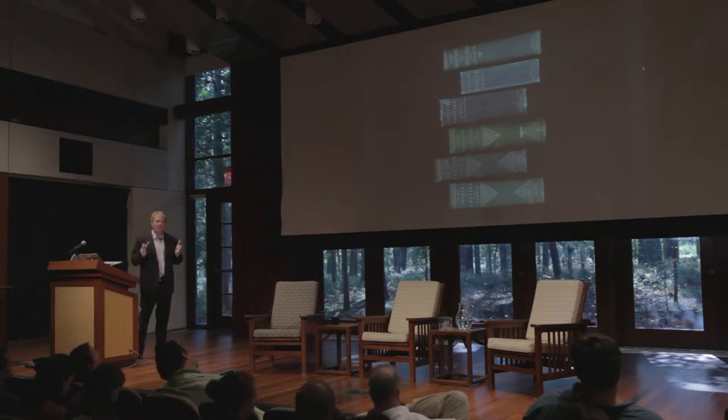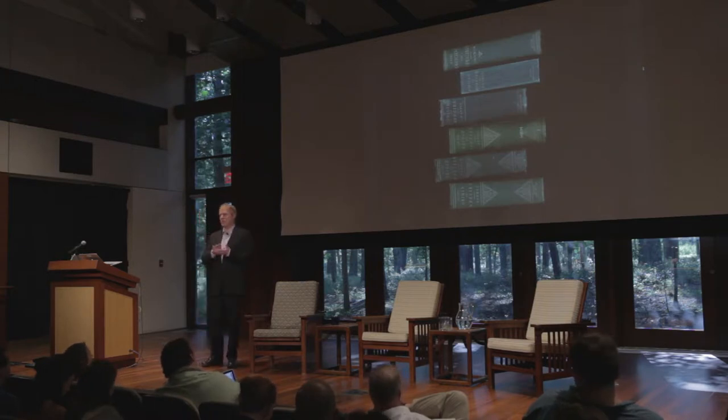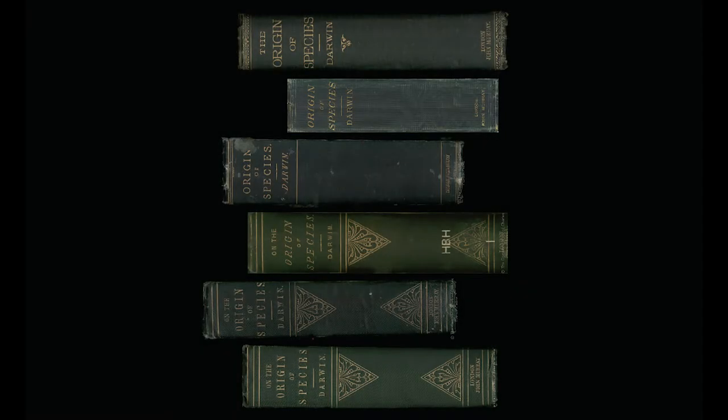Darwin's Origin of Species actually changed a great deal over the course of Darwin's lifetime. The very first edition he put out was about 150,000 words. Six editions later, 14 years later, it had grown to 190,000 words. There was also this guy Wallace who came up with parallel ideas at the same time. Was Darwin cribbing off Wallace's notes? At the end of the day, we're talking about a million words of text across all six editions.